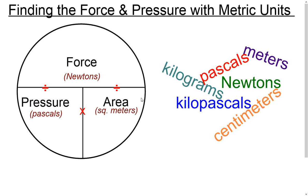Finding the force, pressure, and area is pretty straightforward when you use the information in this graphic, but sometimes when you're dealing with the metric system it can get a little complicated when you have to juggle between kilopascals, newtons, centimeters, kilograms, and meters. In this video, we're going to go through a couple of examples using the metric system to find force and pressure, and hopefully make this a little clearer for you.